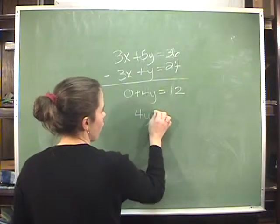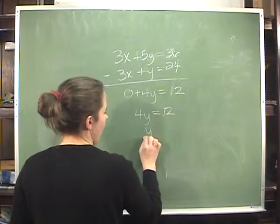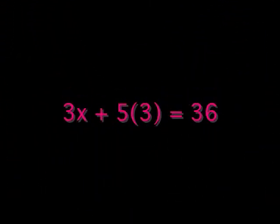Then the 0 goes away, and you're left with 4y equals 12, or y equals 3. Plugging this value back in, you can say 3x plus 5 times 3 equals 36.